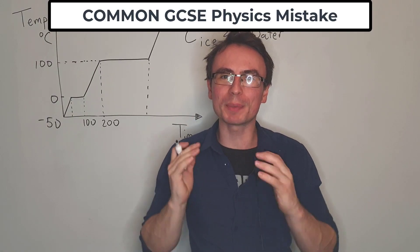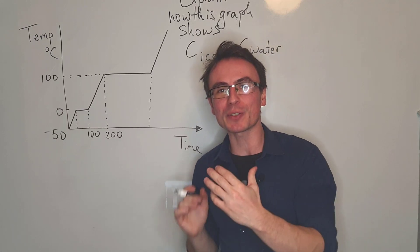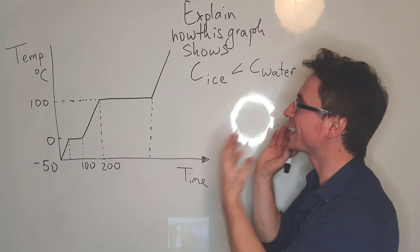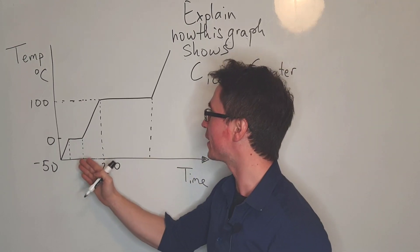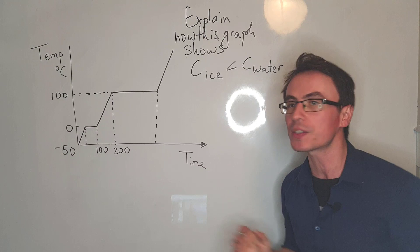Let's have a look at an extremely common mistake in GCSE physics. This is actually a question from the 2021 AQA GCSE physics paper 1. We have this classic graph of ice that is being heated up and what the question is asking us is